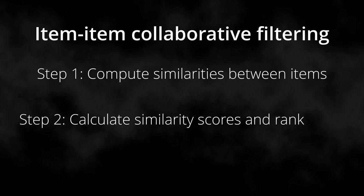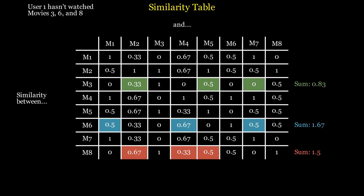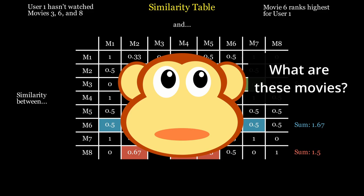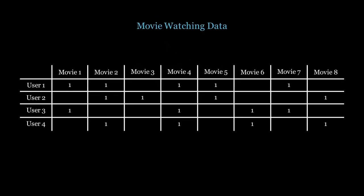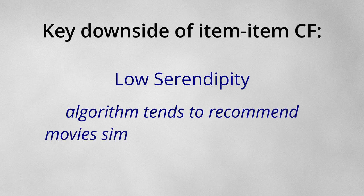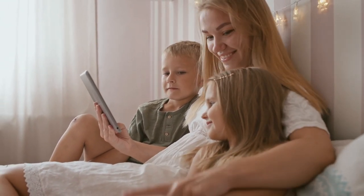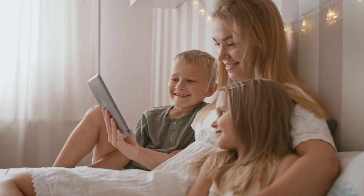For step 2, for each movie the user hasn't seen, I identify the three most similar movies the user has watched and sum their similarity scores. Movies with the highest total scores will be recommended — in other words, movies most similar to those the user has watched. The beauty of collaborative filtering is that you don't need to know anything about the movie itself to make recommendations; all you need to know is who watched which movies. However, there are downsides. Perhaps the biggest is low serendipity: the algorithm tends to recommend movies similar to what the user has already watched, making it unlikely to recommend interesting movies the user wasn't looking for. Serendipity often creates pleasant surprise and magic moments.